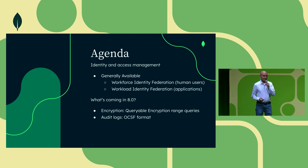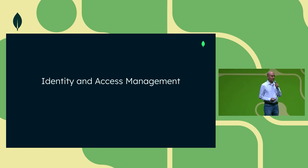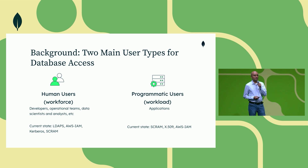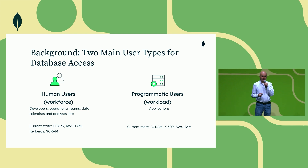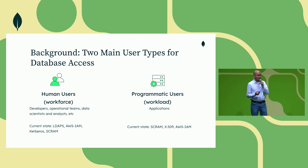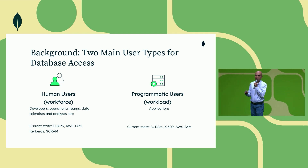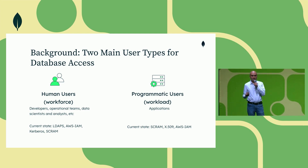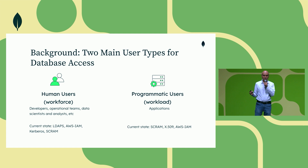Let's get started with identity and access management. There are two main use cases for database user access. The first is human user access — your employees who need to authenticate with the database, such as developers building applications, operations people debugging production problems, analysts, and scientists. The second is programmatic access — applications that need to authenticate with the database to insert, delete, and update data as users interact with those applications. So: human users as workforce, and programmatic users as workloads.